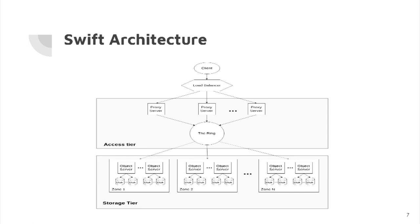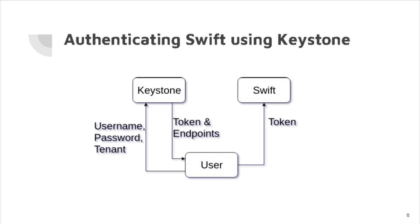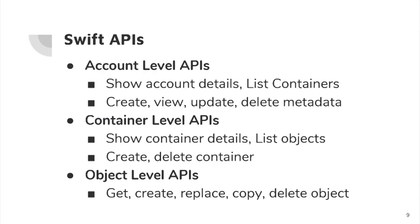After installing Swift, we also needed to create an authentication system to authenticate the user and incoming requests. For that we use the OpenStack identity service called Keystone. We integrated Swift with Keystone. A user sends username, password, and tenant details — tenant being the project the user is working on — to Keystone, and Keystone returns an authentication token along with an endpoint URL. At that URL, the user sends the token to access the API. The APIs provided by Swift are at three levels: account level, container level, and object level APIs — which show, create, update, and delete metadata about all these things.